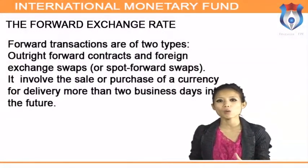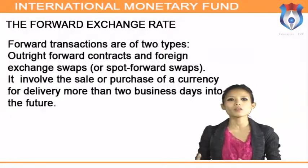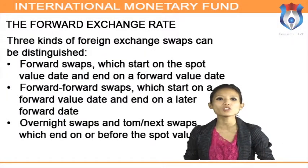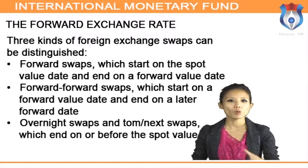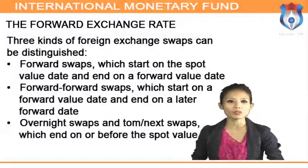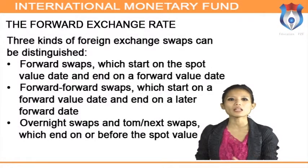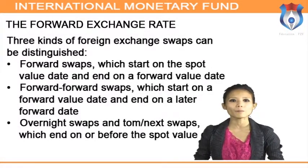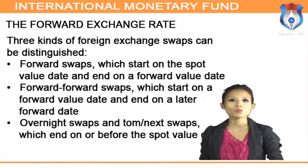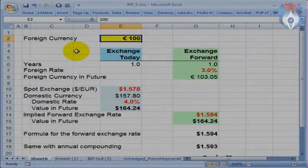Forward transactions are of two types: outright forward contracts and foreign exchange swaps, also called spot-forward swaps, which involve the sale or purchase of a currency for delivery more than two business days into the future. Three kinds of foreign exchange swaps can be distinguished: forward swaps, which start on the spot value date and end on a forward value date; forward-forward swaps, which start on a forward value date and end on a later forward date; and overnight swaps and tom-next swaps, which end on or before the spot value date.